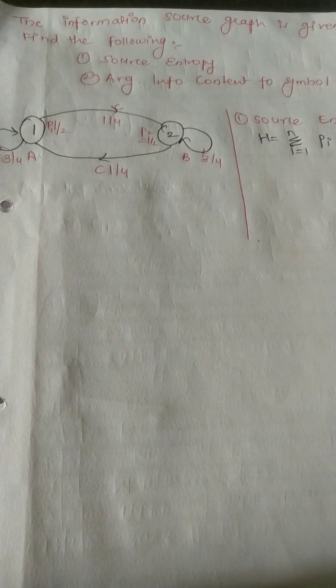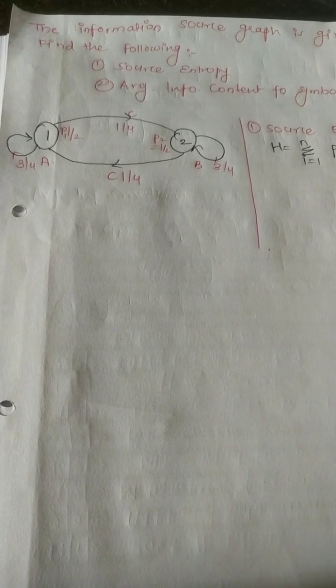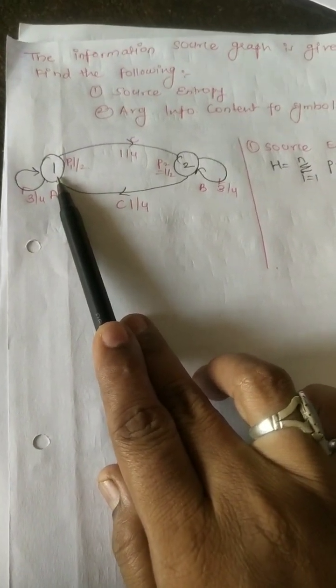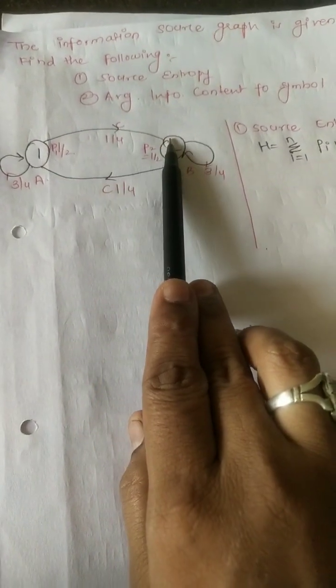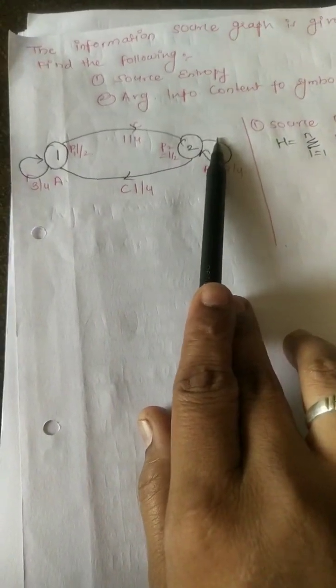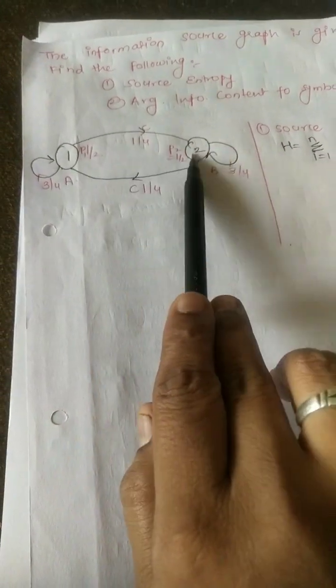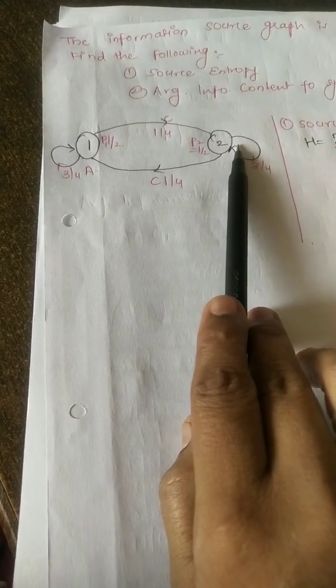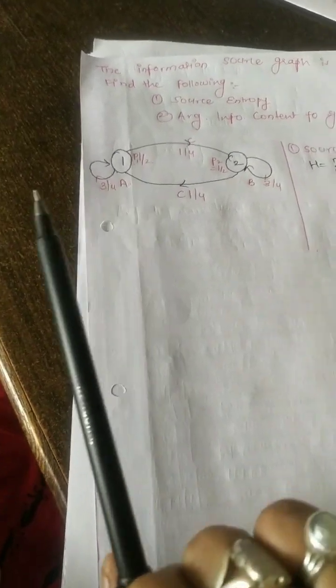We will discuss the complete solution for the Markov statistical model for information source. A Markov source is represented in graphical form, where the states are represented by nodes of the graph and the transitions between states are represented by directed lines from the initial to final state. For example, from state one to state two, one will be the source and two will be the receiver.